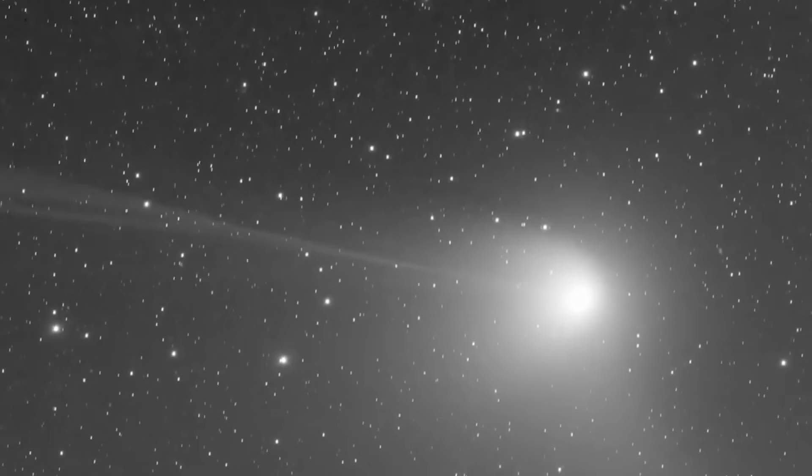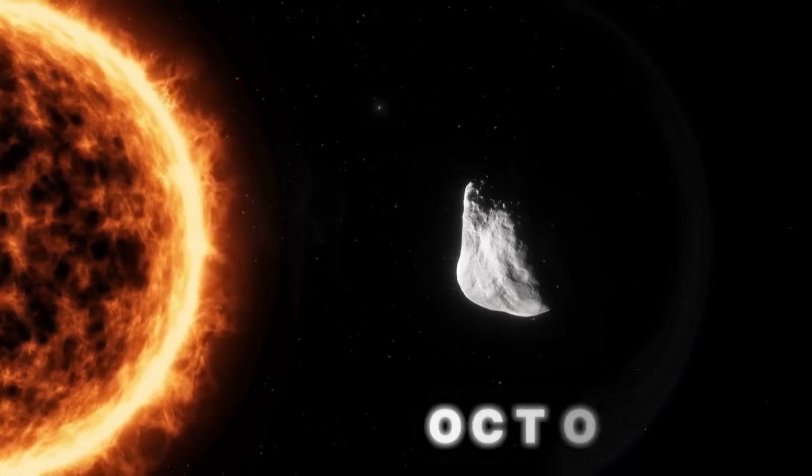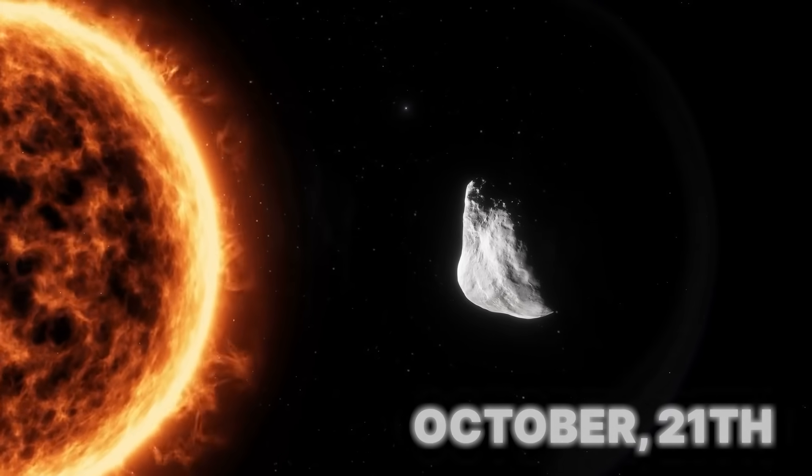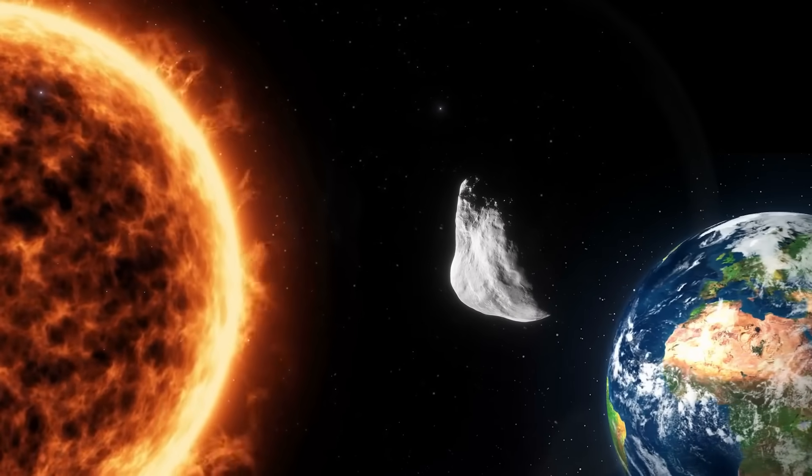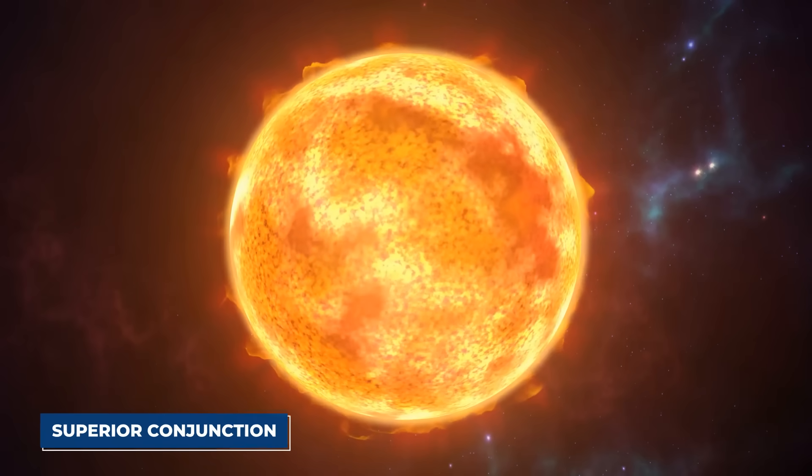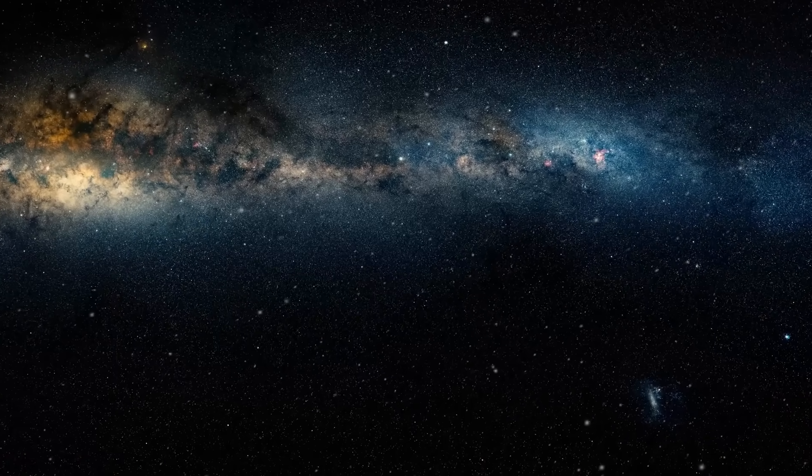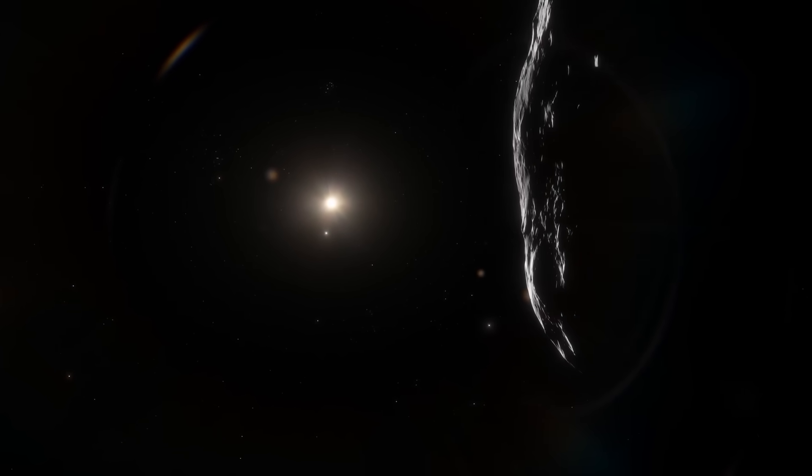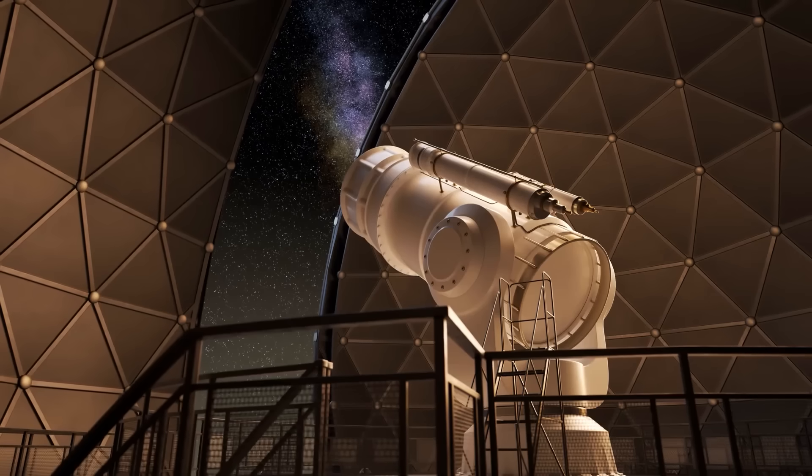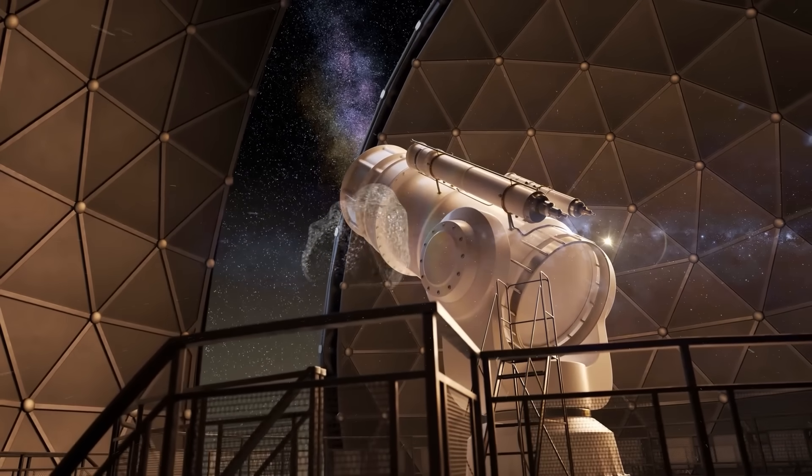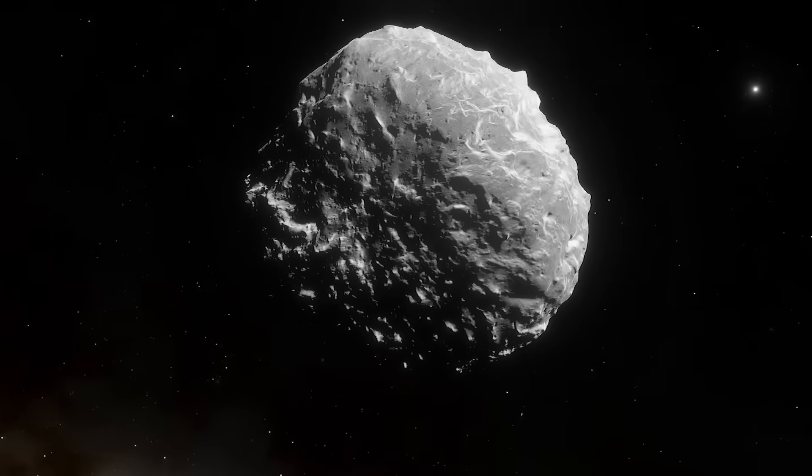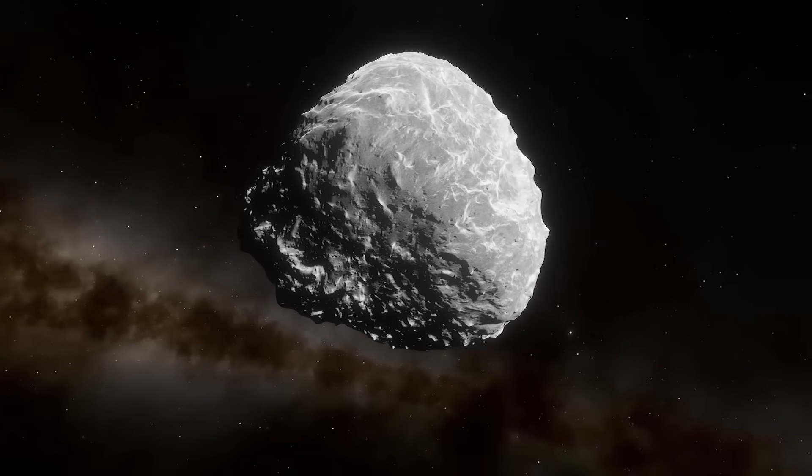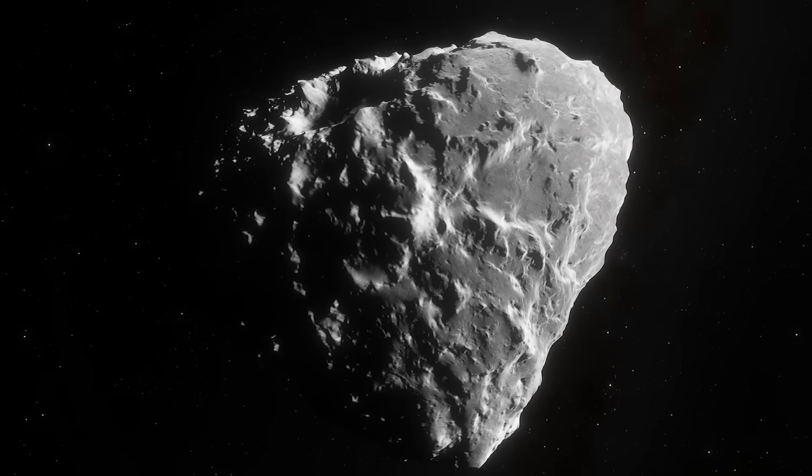You see, just before this critical event, something else happens. On October 21st, the object will pass directly behind the sun from our point of view on Earth. This is called a superior conjunction, and it creates a cosmic blind spot. For weeks, from mid-October until late November or even early December, the sun's intense glare will make it impossible for our telescopes to see 3I Atlas. We will be completely blind. Think about that. At the most important moment of its journey, when it's under the most stress and most likely to reveal its true nature, we won't be able to watch.